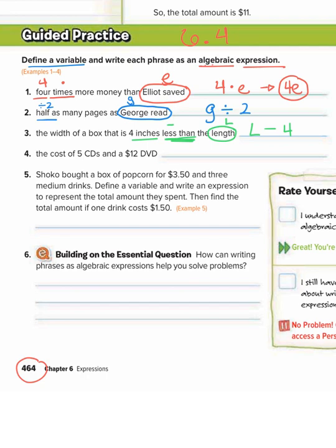Number 4, the cost of 5 CDs and a $12 DVD. So we have 5 CDs and a $12 DVD. But what we're trying to find is the cost. So we don't know the cost of 5 CDs. So I'm going to use the variable C. We do know the cost of the DVD though. That's $12.